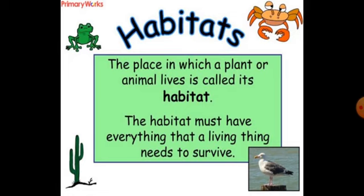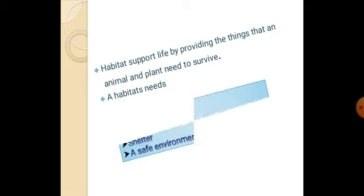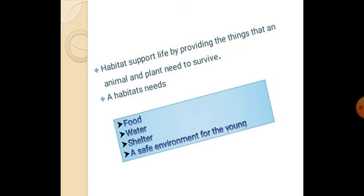The place in which a plant or animal lives is called its habitat. The habitat must have everything that a living thing needs to survive. Habitats support life by providing the things that animals and plants need to survive, for example food, water, shelter and a safe environment for the young.